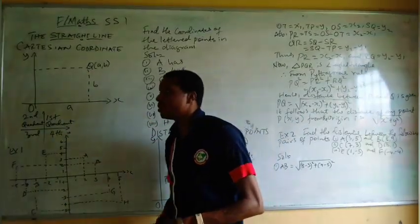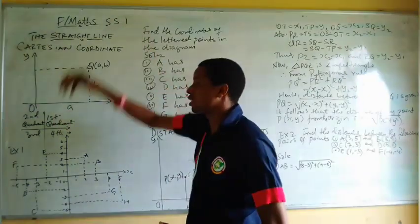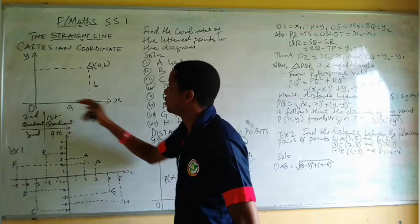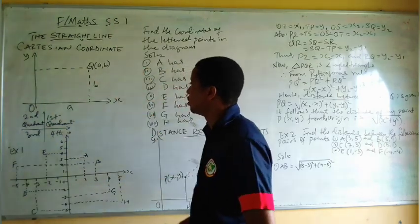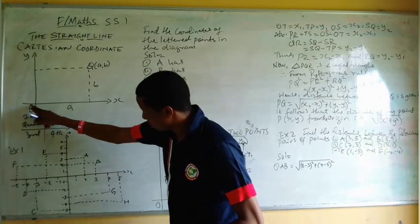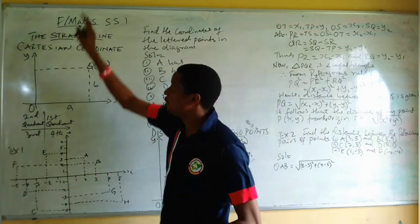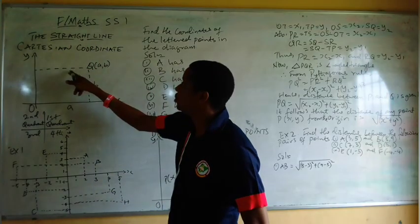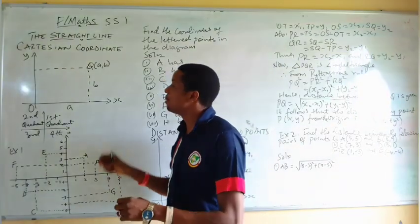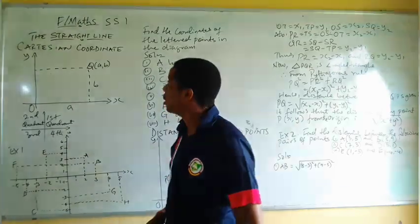We are familiar with the XY plane, and that is what we have here. We have the Y axis, which is the vertical one, and the horizontal axis is the X axis. We have a point Q, and suppose this is the origin O. The point along the X axis is A and the point along the Y axis is B. So the point at which the two meet is Q, with coordinates A, B. That is why we say if we know a particular point in space, we can determine the points using the coordinate system.